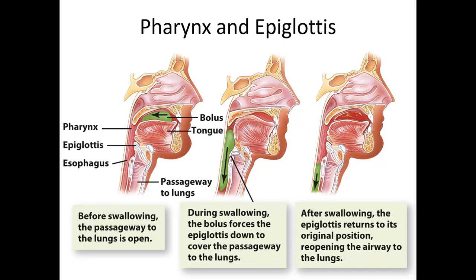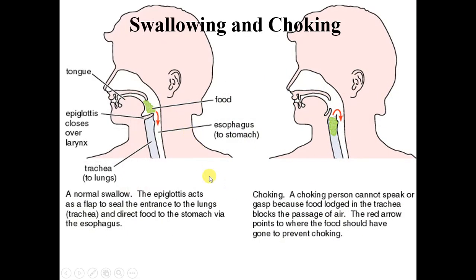After chewing and forming the bolus, there is the swallow. The swallow is an amazingly complex movement involving quite a few muscles and nerves. It sets up a precarious situation because the passageway to the lungs sits right next to the passageway to the stomach. When you swallow, a cartilage structure called the epiglottis should cover up the passageway to the lungs. If an entire bolus moves into the trachea, this can cause choking, which can be deadly.